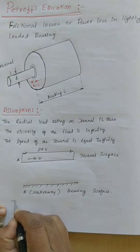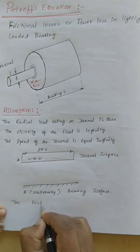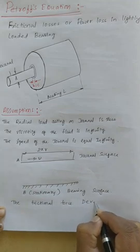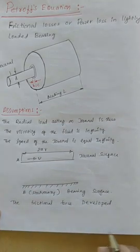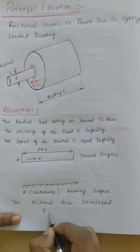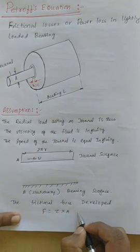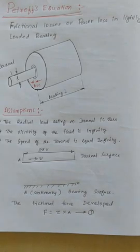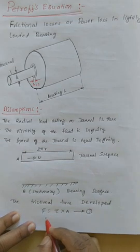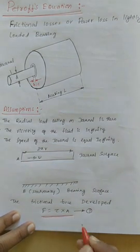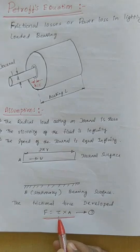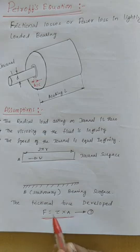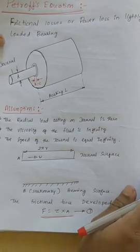The frictional force developed for a bearing can be given by: frictional force F equals tau into area A. This is equation 1, where tau is the shear stress on the journal surface, A is the area of the journal surface, and F is the frictional force.